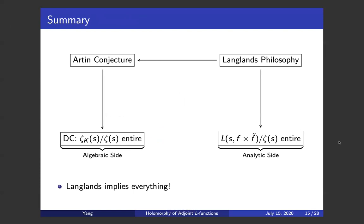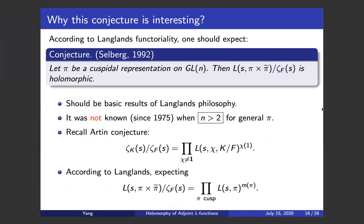Let me give a concrete example. This example is on GL_n: GL_n acts on the algebra of sl_n by conjugation. This introduces an adjoint representation of GL_n of C, viewed as the dual group of GL_n. So you get an L-group homomorphism from the L-group of GL_n to GL_{n²-1}. By the definition of the Langlands L-function associated to this adjoint homomorphism, you will see that the adjoint L-function is precisely the analytic ratio we studied before. So Langlands functoriality together with Langlands correspondence will imply that this ratio is holomorphic.